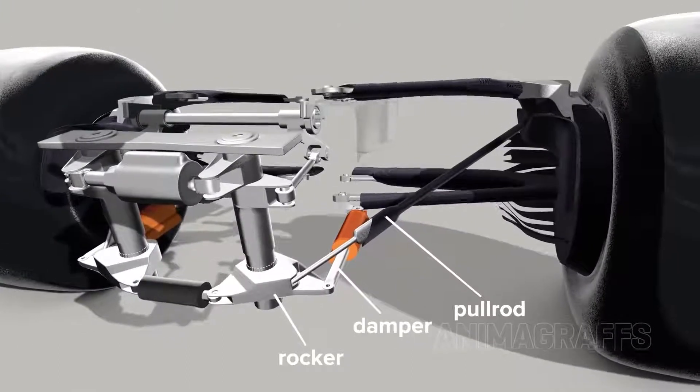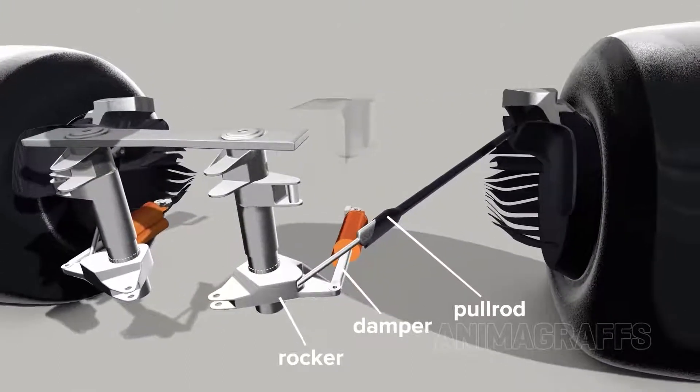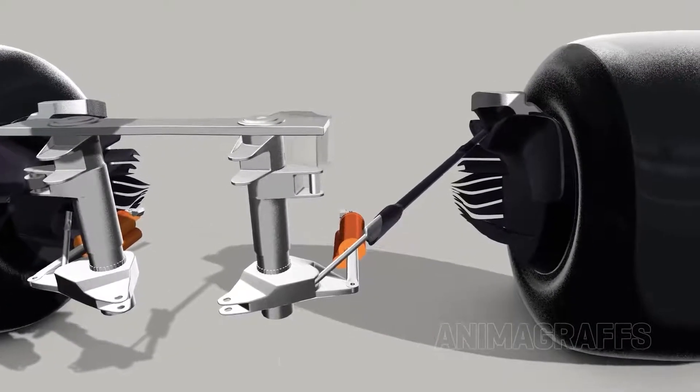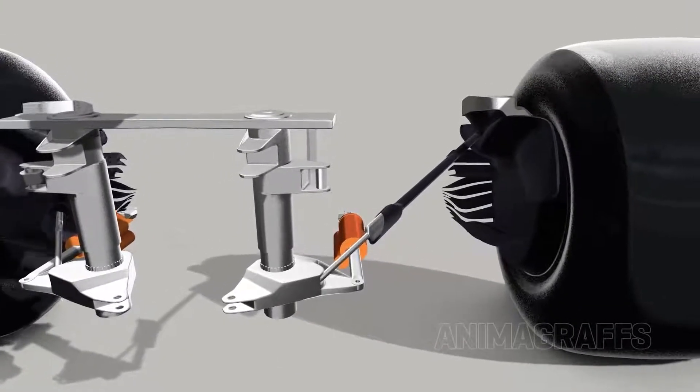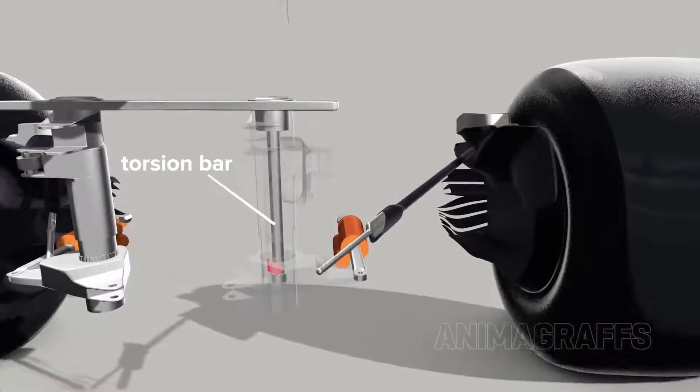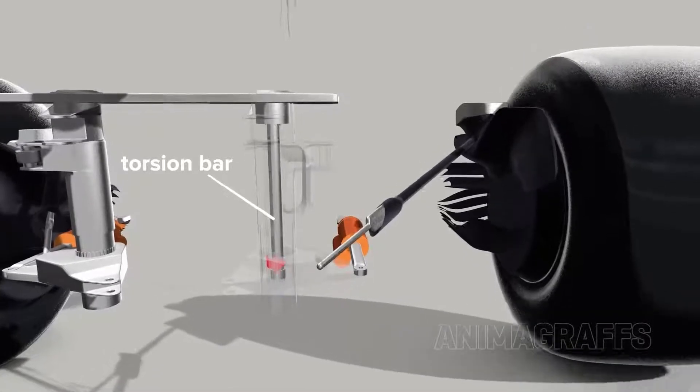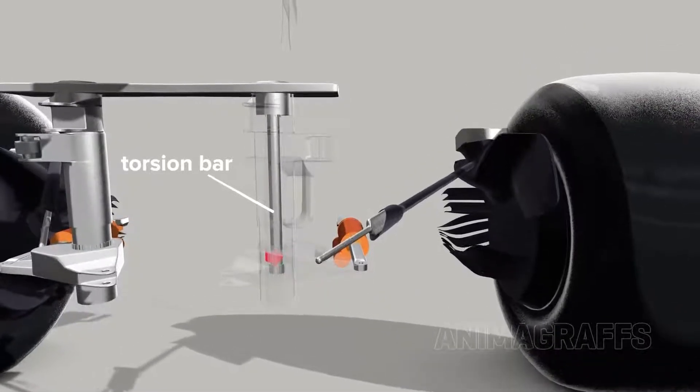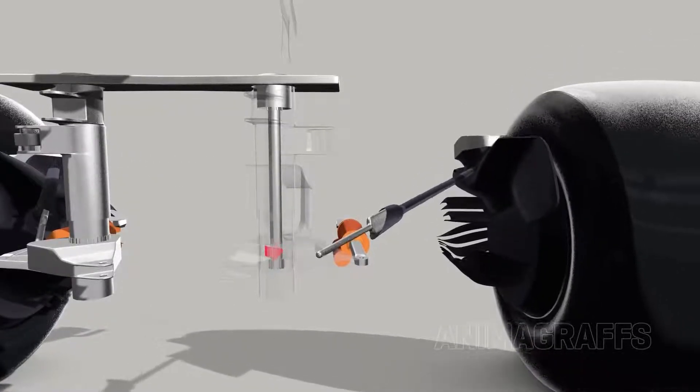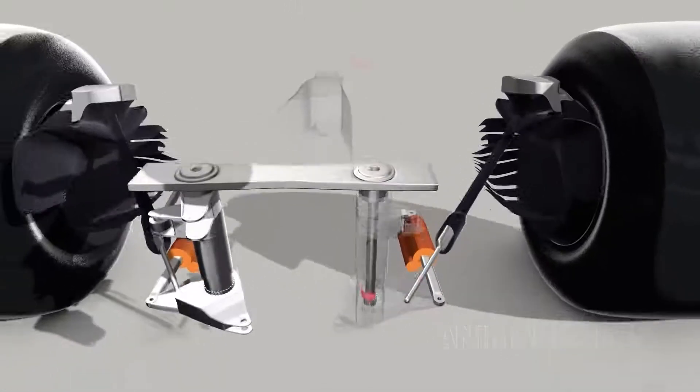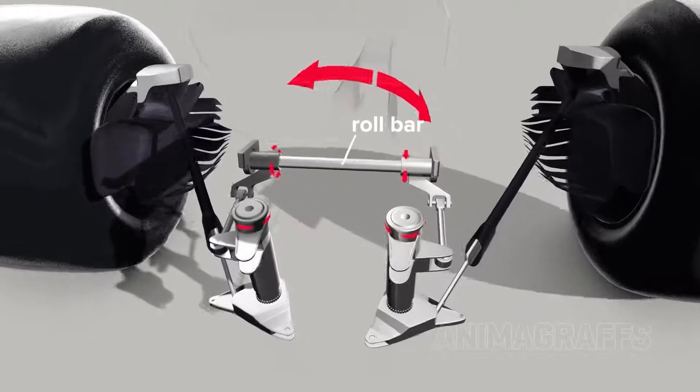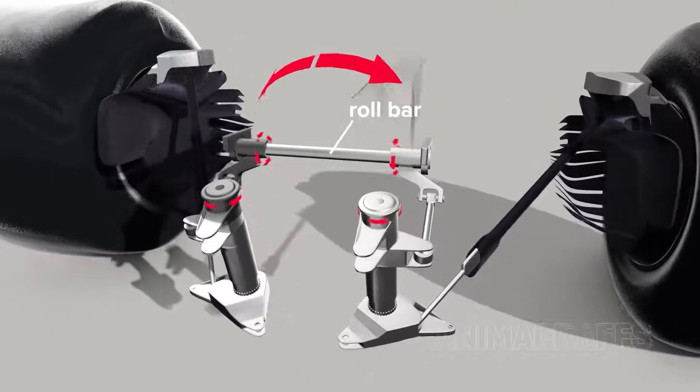The pull rod connects to a rocker and damper, which we call shock absorbers in normal cars. But instead of large coiled springs, F1 suspension uses a small metal rod called a torsion bar that twists under load. One side of the torsion bar moves with the outer cylindrical shaft, while the other side is stationary. Both independent suspension sides are linked to a central roll bar that twists to limit body roll.